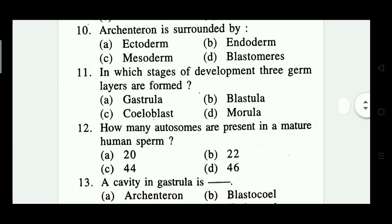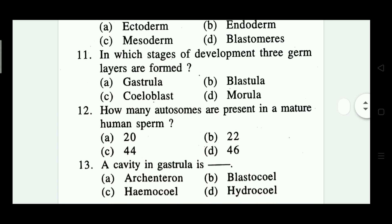Question number eleven: in which stage of development are three germ layers formed? Options: gastrula, blastula, celluloblast, and morula. Which one is correct? Gastrula — option A is the correct answer.